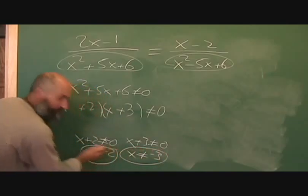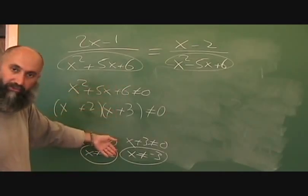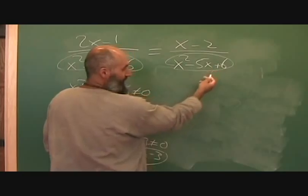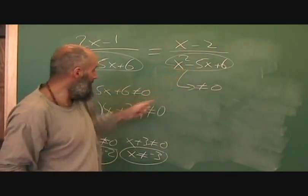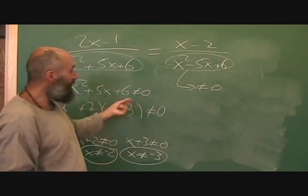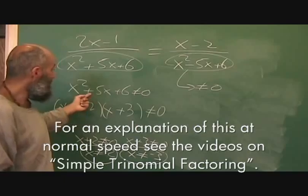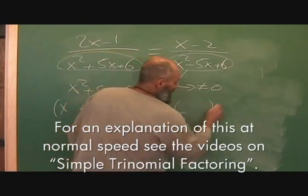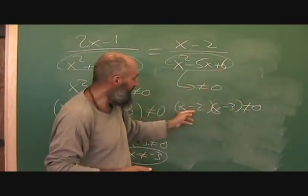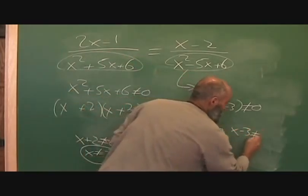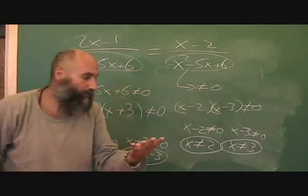For the other side, you do the same thing: x squared minus 5x plus 6 can't equal zero. This time you're looking for two numbers that multiply to give positive 6 and add up to give negative 5. The signs are different — it factors to (x minus 2)(x minus 3). So x can't equal 2 and x can't equal 3. This equation has four restrictions in total.